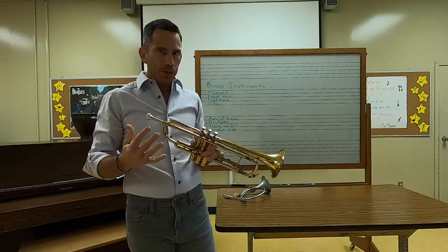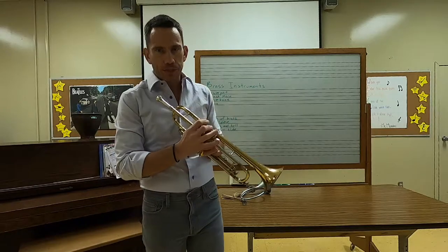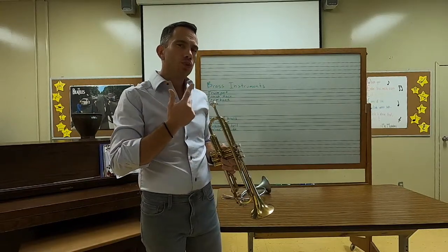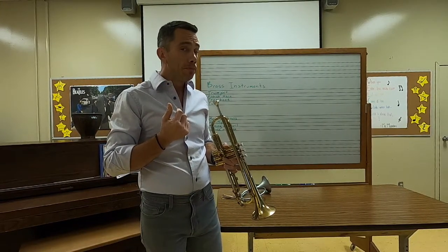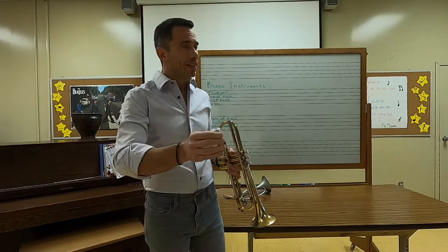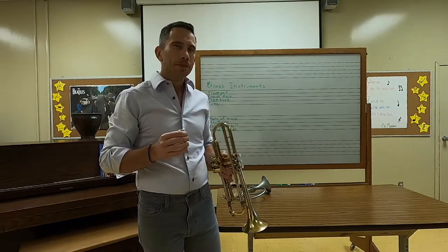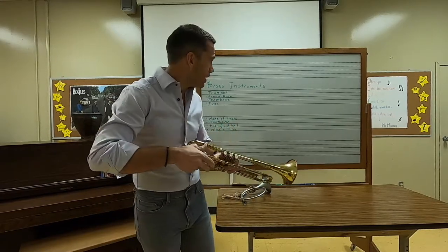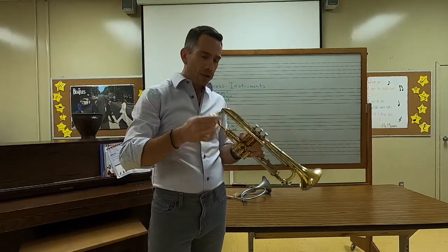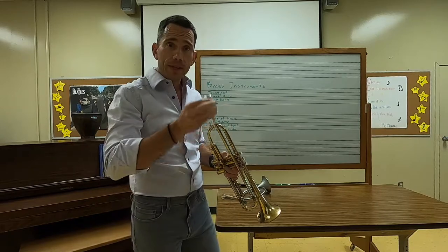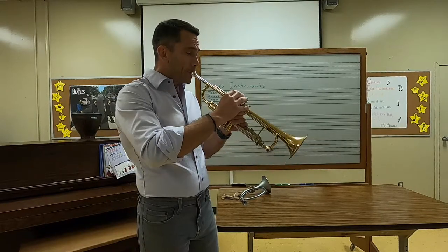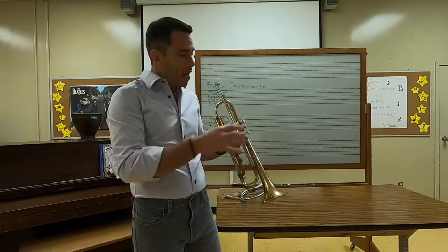When you play brass instruments, there's one thing everybody has to do — you have to make a buzzing sound. You have to buzz with your lips like this. Then you take that little buzz sound and put it on the mouthpiece. That buzzing vibration, when it travels through all the tubing and out the bell, then it sounds like a trumpet. So it goes from a simple buzz, and as soon as you put it on the mouthpiece it sounds like this.